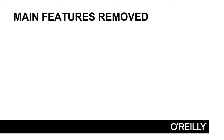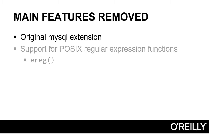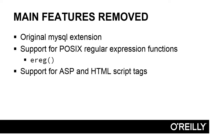Let's just recap the main features that have been removed from PHP 7. The original MySQL extension has gone — to connect to MySQL, you now need to use MySQLi or PDO. There's no longer any support for POSIX regular expression functions such as EREG; use Perl-compatible regular expression functions instead. And you can no longer wrap PHP code in ASP or HTML script tags — only standard PHP tags are permitted.